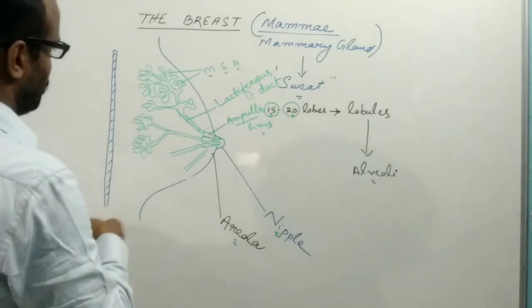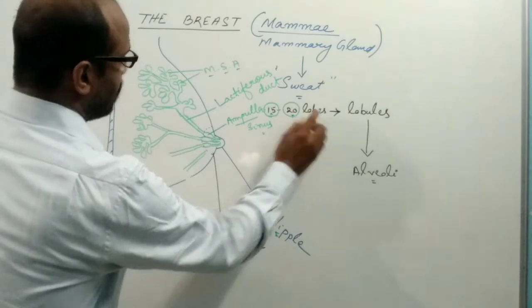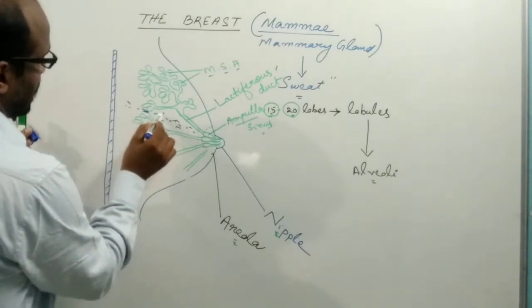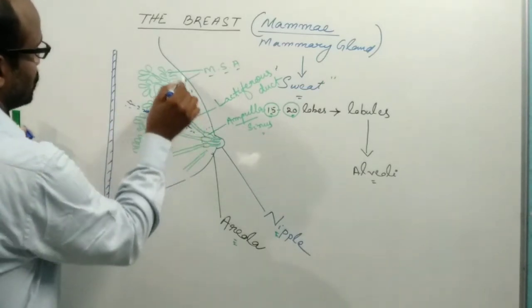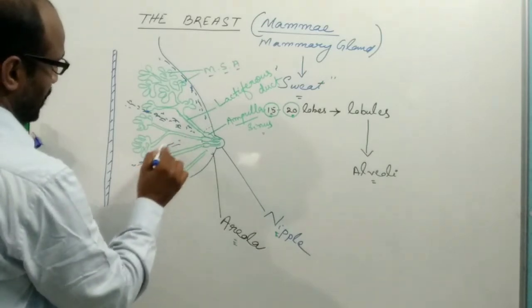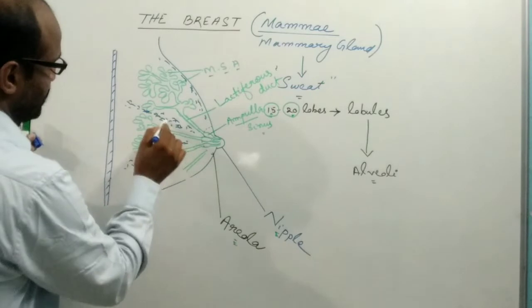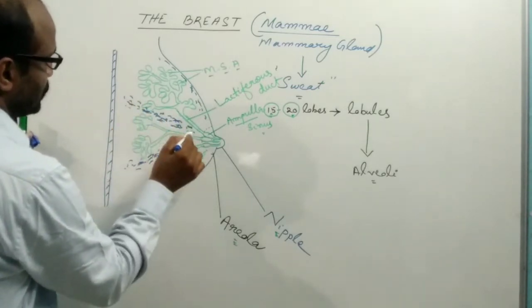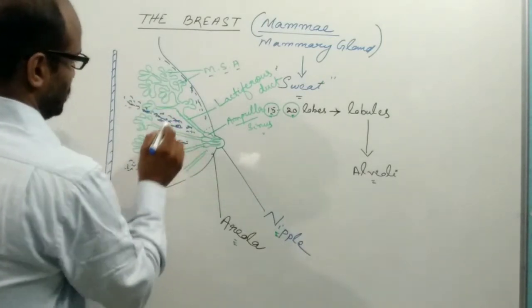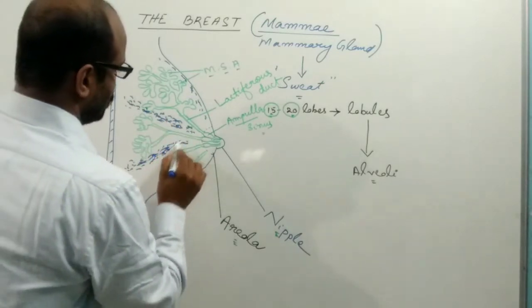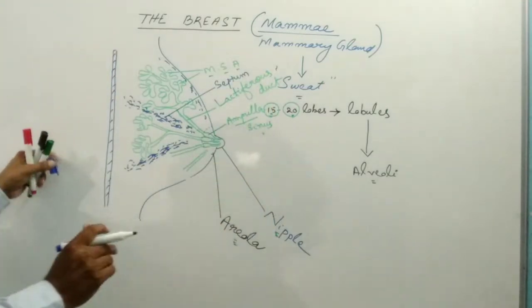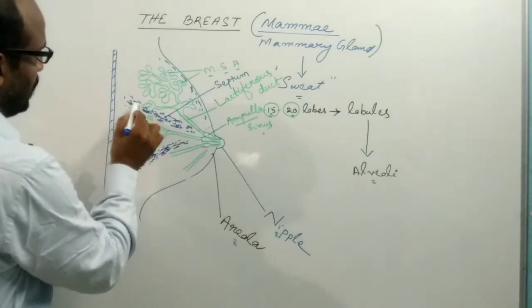The breast is divided into 15 to 20 lobes. In between the lobes, there is fibrous connective tissue which forms the septa. The singular form is septum. These connective tissue septa are present in between the lobes of the breast.